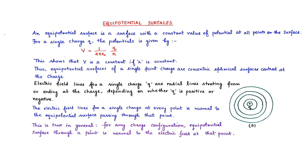An equipotential surface is a surface with a constant value of potential at every point on the surface. For a single charge Q, the potential is given by V equals to 1 by 4 pi epsilon naught into Q by R. This shows that V is constant if R is constant.